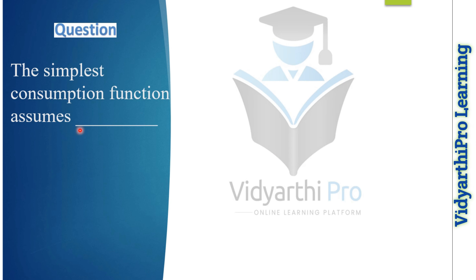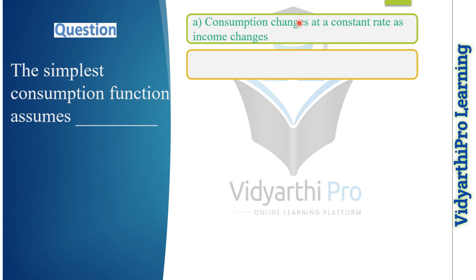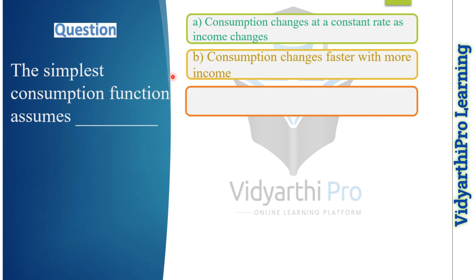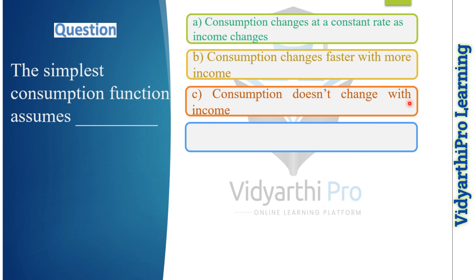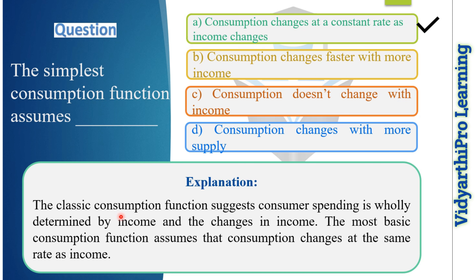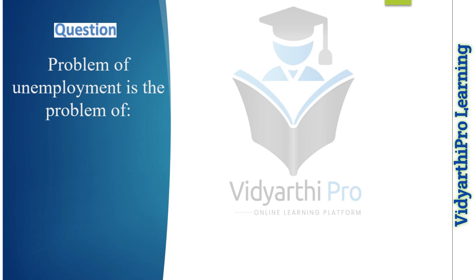Our next question: the simplest consumption function assumes what? Option one: consumption changes at a constant rate as income changes. Option two: consumption changes faster with more income. Option three: consumption does not change with income. Option four: consumption changes with more supply. The correct answer is option A: consumption changes at a constant rate as income changes. The classic consumption function suggests that consumer spending is wholly determined by income and changes in income.